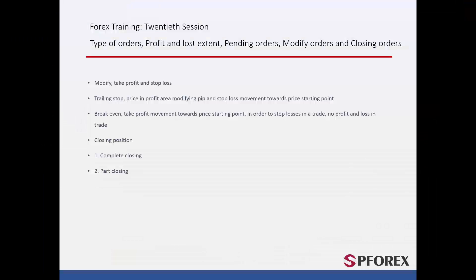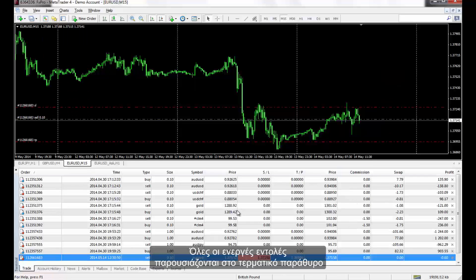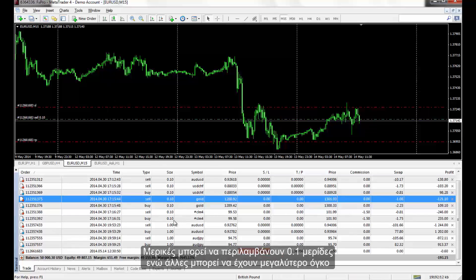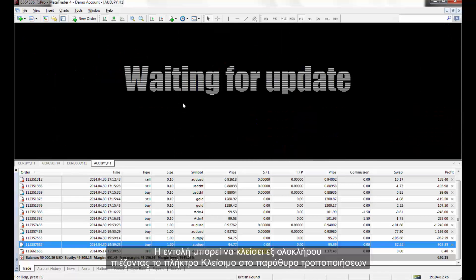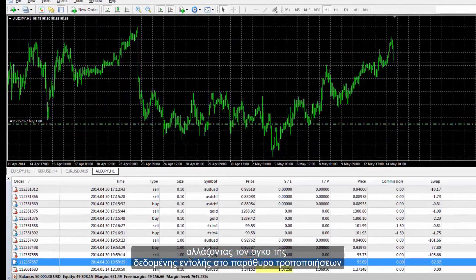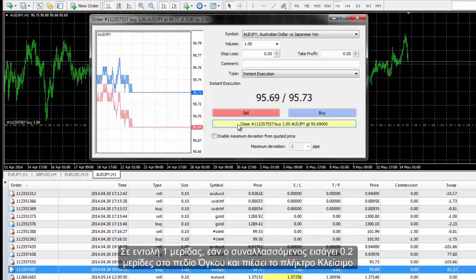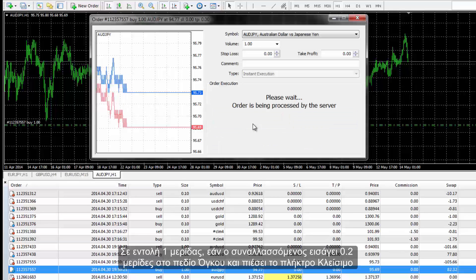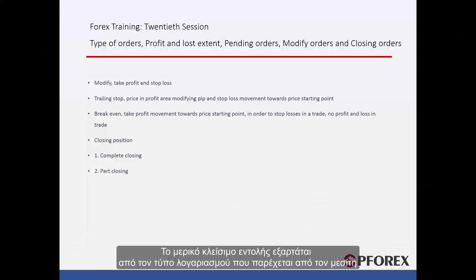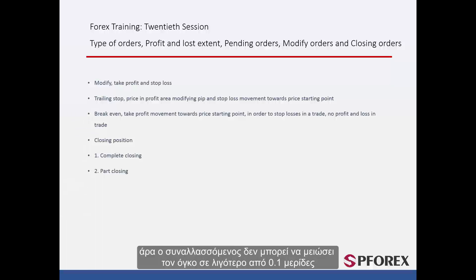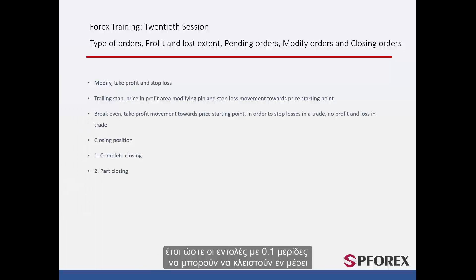Orders can be closed entirely or partially. All active orders are shown in the Terminal window. A trader can close an order through the Modification window by pressing the Close button. An order can also be partially closed by changing the volume in the Modification window. In a 1 lot order, if a trader enters 0.2 lot in the Volume field and clicks Close, only 0.2 lot will be deducted and the remaining volume will be 0.8 lot. Partial closure depends on the account type provided by the broker. For instance, FXPro provides a minimum volume of 0.1 lot per order, while ICM Brokers provides 0.01 lot, allowing partial closure of 0.1 lot orders.